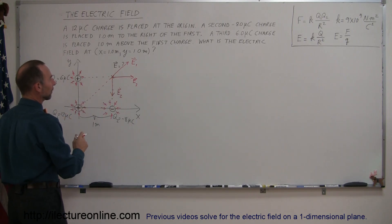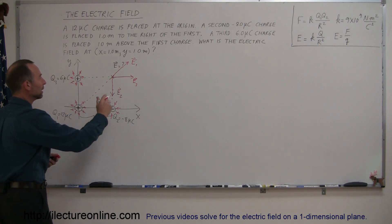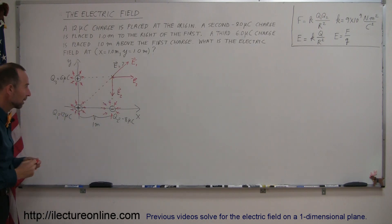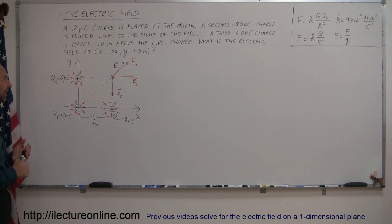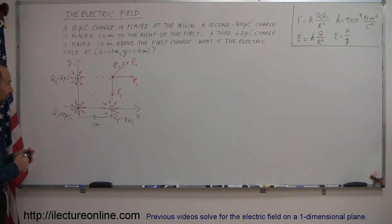To find the net electric field, we need to do a vector sum of those three electric fields. With vectors, we need to find the x and y components of each vector. Before we do that, we need to find the magnitudes of each vector. So the next step is to find the magnitude of each of those three vectors.